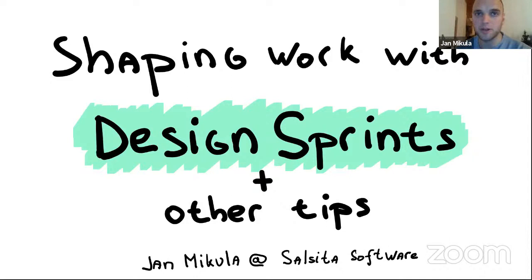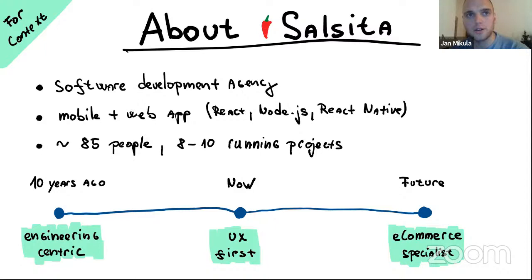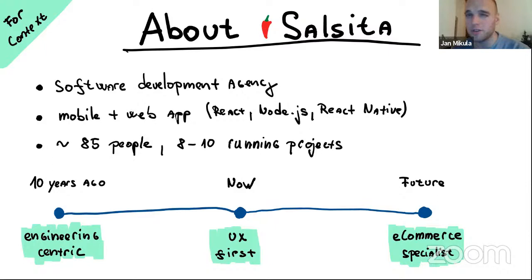For context, Salsita is a software development agency, which means we work for clients. We mostly do mobile and web applications, focusing on technologies like React, Node.js, and React Native. Currently we have around 85 people — 40 to 50 developers, 12 QA engineers, 6-7 UI developers, a few designers, plus PMs. Right now we're running 8 to 10 projects for clients.